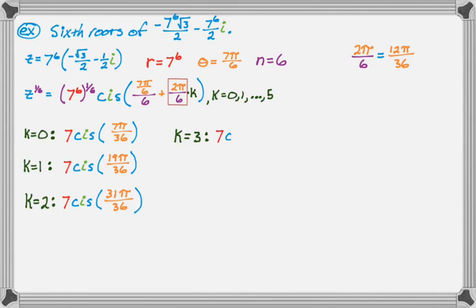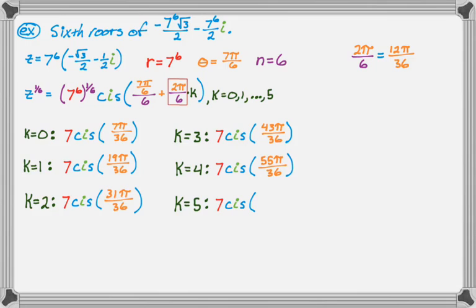And we can just keep going. So it'll be 7 cis, add it again, we get 43π/36. If it's 4, we get 7 cis 55π/36. And finally, if k is equal to 5, we're going to get 7 cis 67π/36.